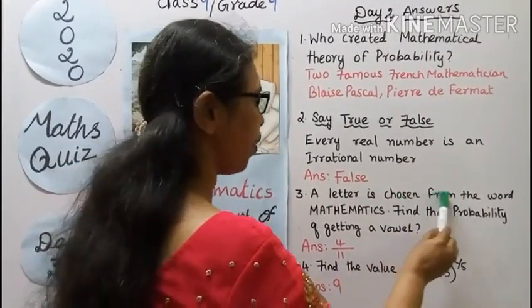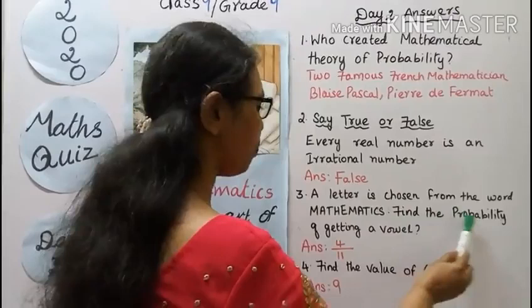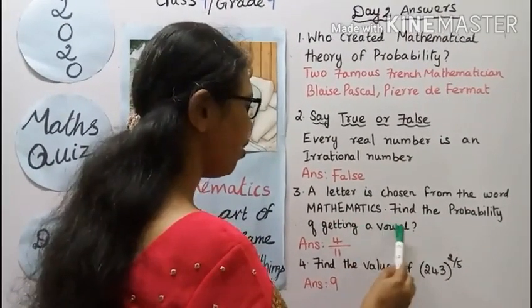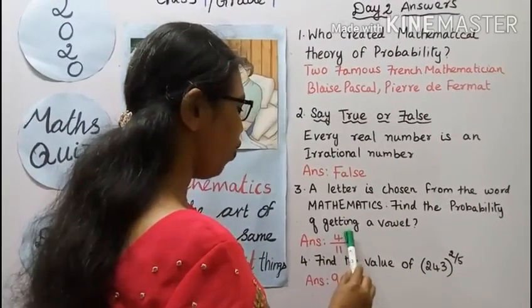Third question, a letter is chosen from the word mathematics. Find the probability of getting a vowel. Answer: 4 by 11.